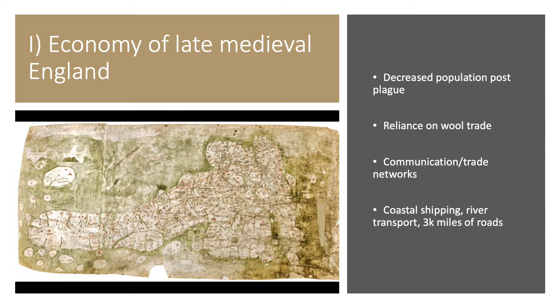The infrastructure was still very much in place: communication was actually much more reliable and efficient than one might think, with written communications able to cross England efficiently. There was also active trade infrastructure — coastal shipping, internal rivers used to move goods — and just shy of 3,000 miles of roads, some dating back to Roman times. This is the Guff map of England, giving a sense of how populated it was and how they envisioned the topography.